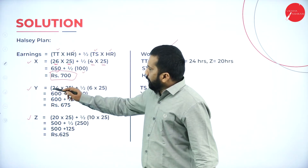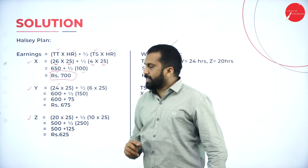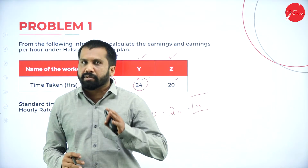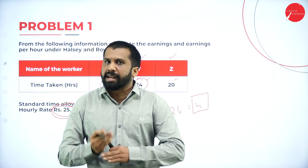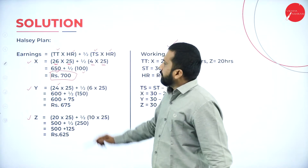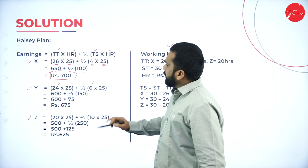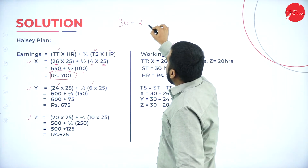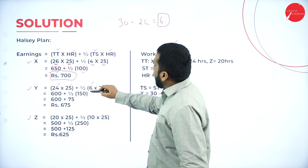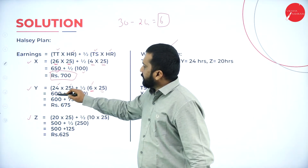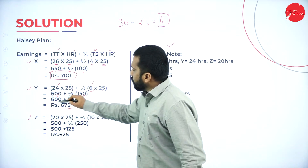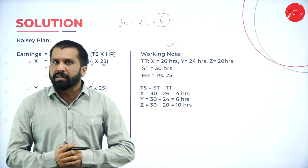Similarly, for Y — time taken is 24 hours, hourly rate is 25. Time saved is standard time minus actual time: 30 minus 24 = 6 hours. 24 × 25 = 600. Time saved 6 × 25 = 150; half of 150 is 75. So the earning for Y is 600 + 75 = 675.